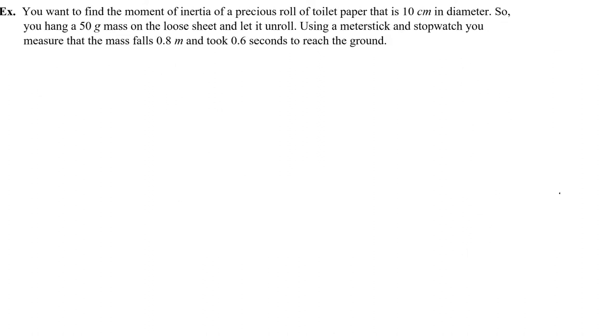Alright, let's do another one. You want to find the moment of inertia of a precious roll of toilet paper that is 10 centimeters in diameter. So you hang a 50 gram mass on the loose sheet and let it unroll. Using a meter stick and stopwatch, you measure that the mass falls 0.8 meters and took 0.6 seconds to reach the ground. All right, so let me take a second to draw this. Okay, so here we have this toilet paper roll that's going to unroll as this mass falls down. So I'm changing height of, we're going to call that 0.8 meters and why don't we decide that down is the positive direction for this problem. Now anything that points down will be a positive factor in our equation.